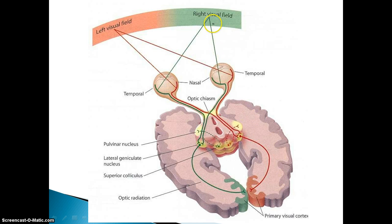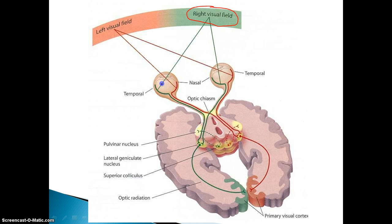Now, things get pretty confusing when you think about where the light goes. For example, if you have things in your right visual field — things that you see on the right side of your body — they are actually handled by the left side of each corresponding eyeball.